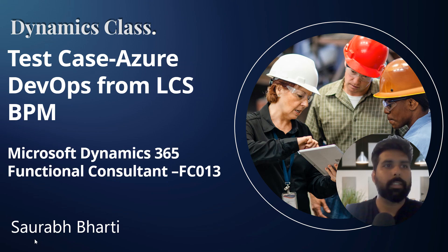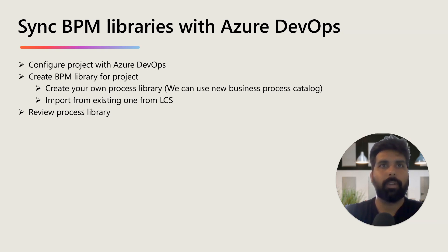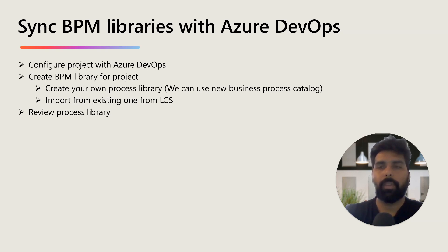So what you require is: first, your LCS project should be configured with Azure DevOps. You also need to have a BPM library for your project. You can create your own process library, or import from APQC like the standard library available as part of LCS. You can also import your own library based on the business process catalog which Microsoft has released. Before you start creating test cases, each test case should be against either a process or a requirement, because that is what you are testing.